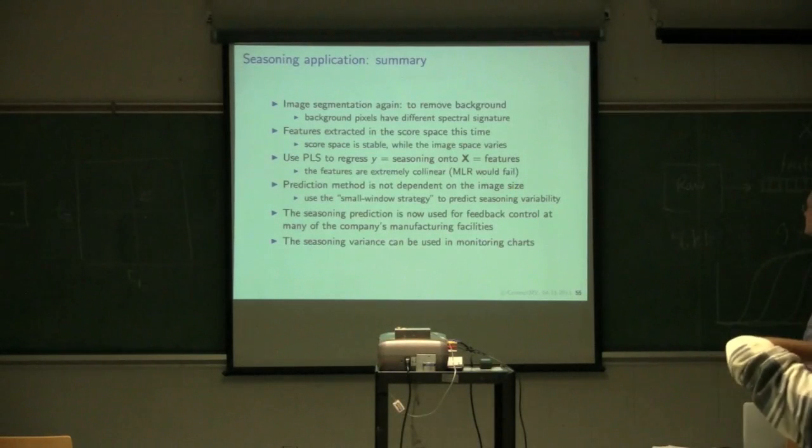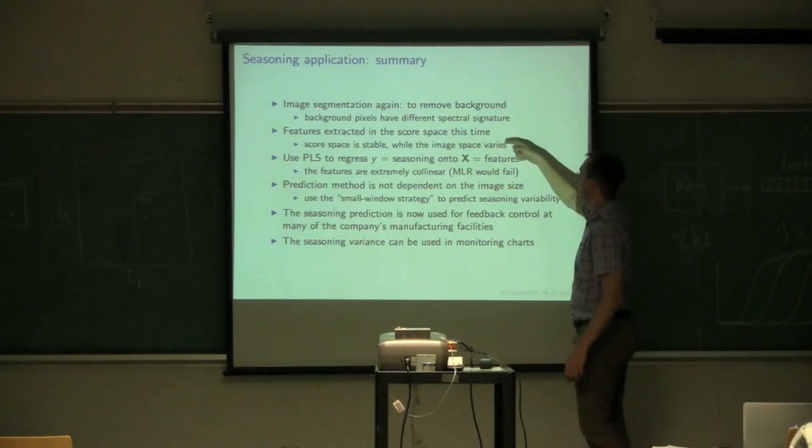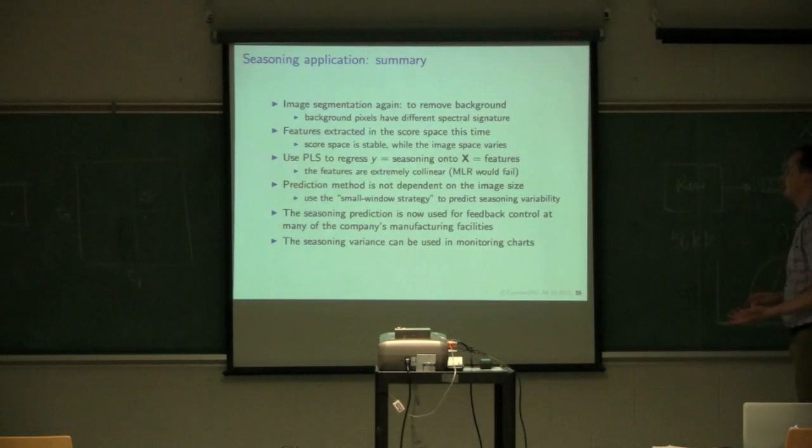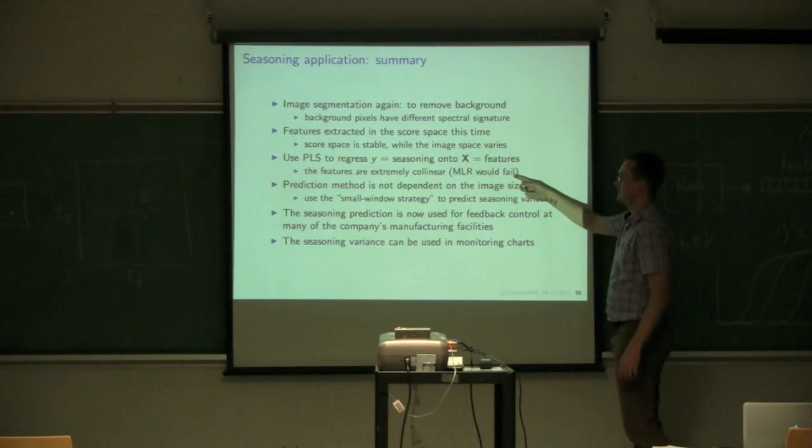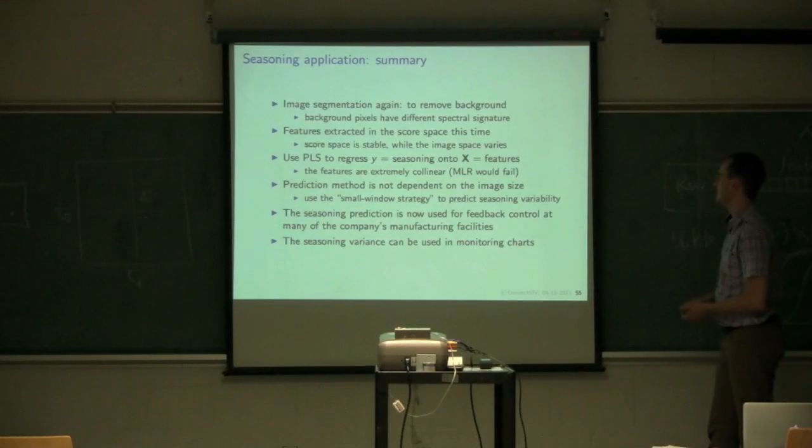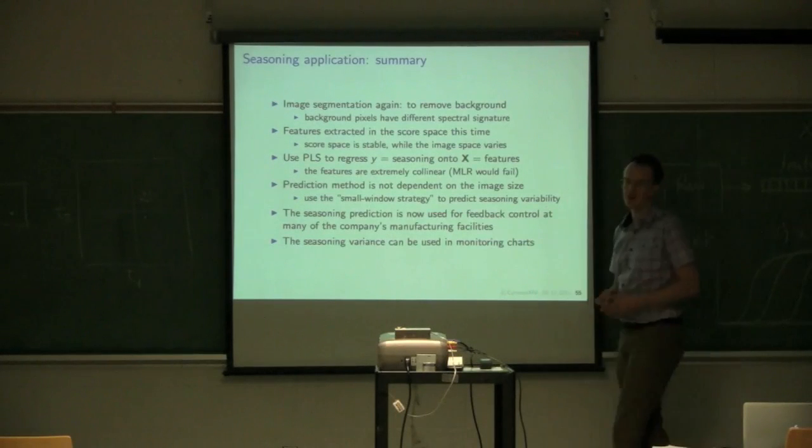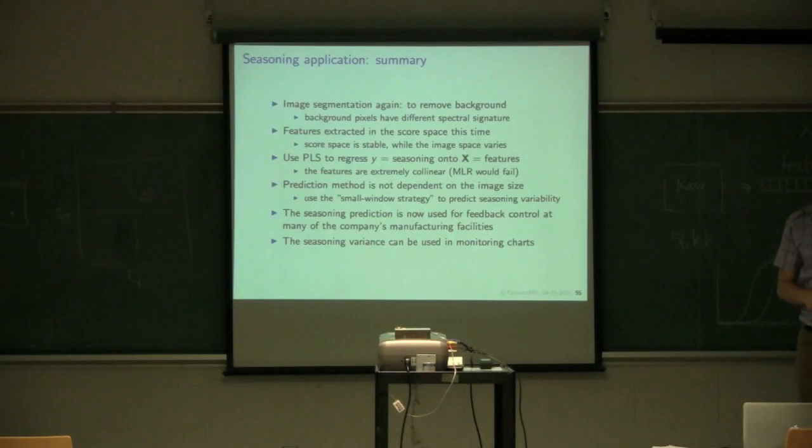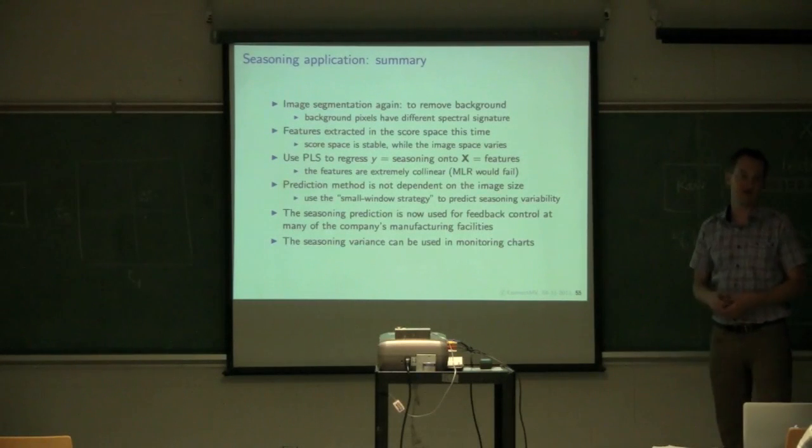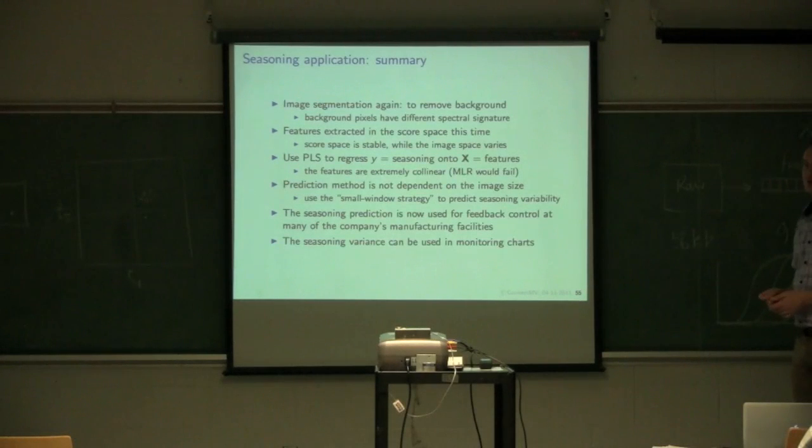Okay, so I think I've covered most of this here in summary. We've removed the background, which has a different spectral signature. Our score space is always stable, despite the variability of the dynamic image space. MLR would definitely fail for these collinear features. We wrote some software for Frito-Lay. They published the journal publications with Frito-Lay on this. We wrote the software that this is now rolled out through many of their facilities. This work started originally from Honglu's thesis back in 2000 to 2003.